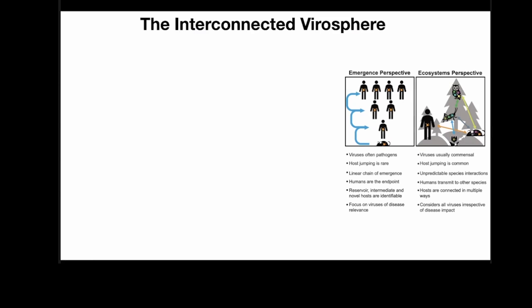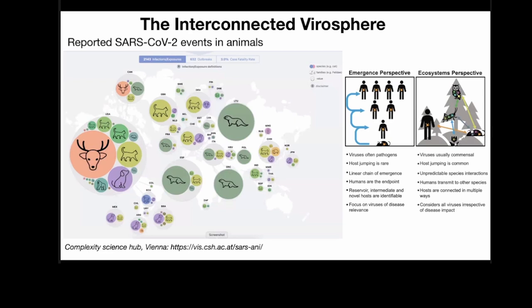A really amazing example of that is SARS-CoV-2. In 35 years of virus work, I've never seen a virus that can infect as many different species. This website from Vienna shows a map of the world and some of the animals infected with human SARS-CoV-2 — transmitted from humans — including mink, cats, dogs, tigers, lions, armadillos, gorillas, deer. White-tailed deer in the US have very high prevalence. So humans are passing their virus to other animals. There's a very complicated global ecosystem with things being passed around — it's not a simple chain with humans at the end.